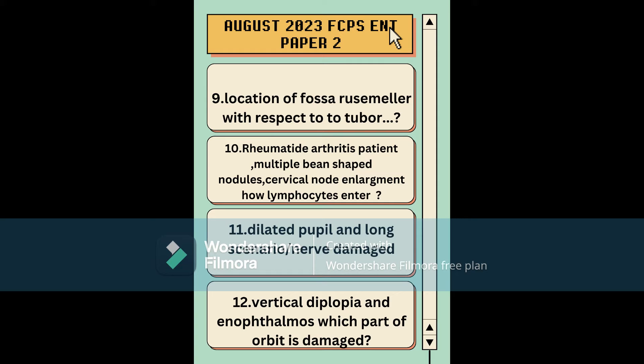There was a weird scenario about a rheumatoid arthritis patient with multiple bean-shaped cervical nodal enlargements asking how lymphocytes enter. Another question had a long scenario where the key finding was dilated pupil and the question asked which nerve was damaged. Then there was a question about vertical diplopia and enophthalmos asking which part of the orbit was damaged — I was confused between the floor and the roof.